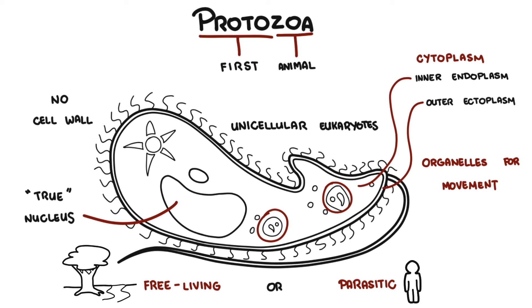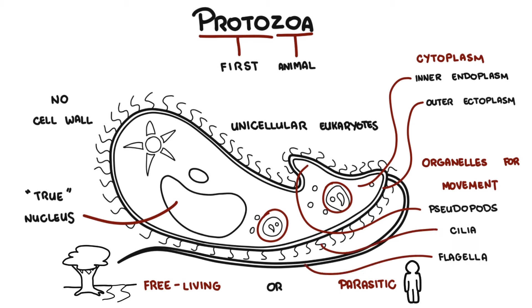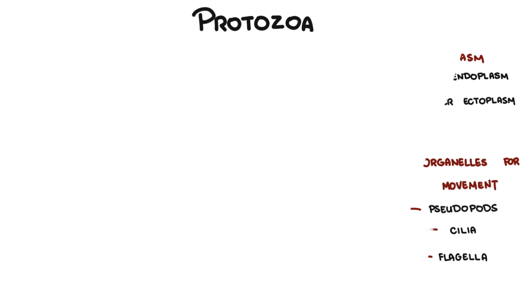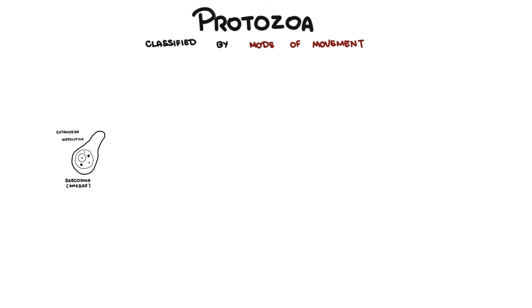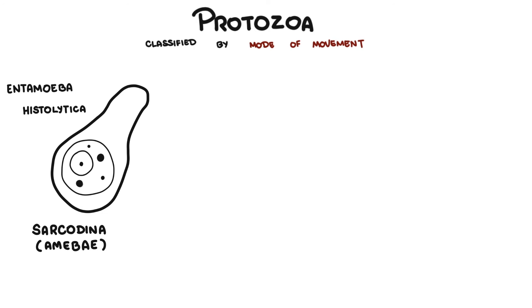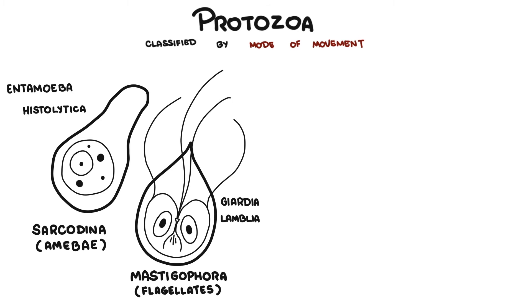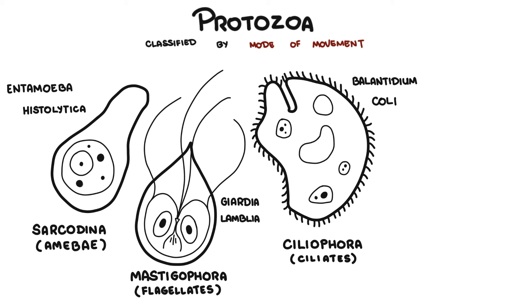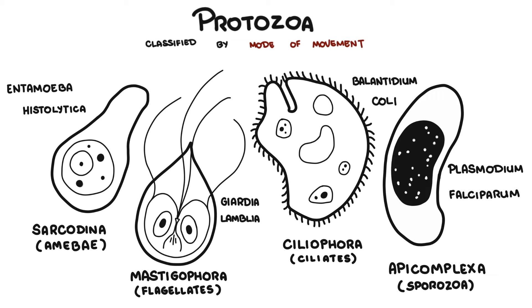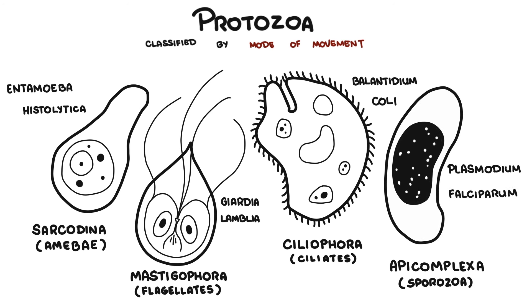The organelles responsible for movement include pseudopods, cilia, or flagella. It is the mode of movement of the protozoa that is used to help classify them into four groups: the amoeba, also known as the sarcodina; the flagellates, the mastigophora; the ciliates, the ciliophora; and the sporozoa, the apicomplexa.